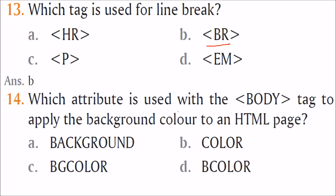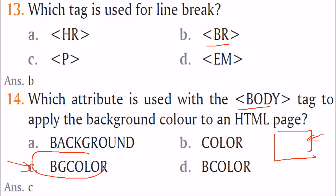Which attribute is used with the body tag to apply background color to an HTML page? The answer is C — bgcolor is used to apply background color to an HTML page.